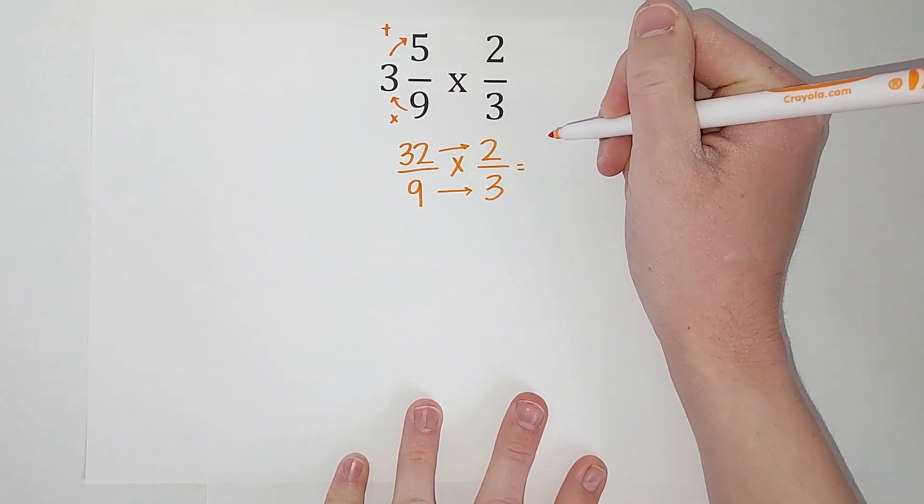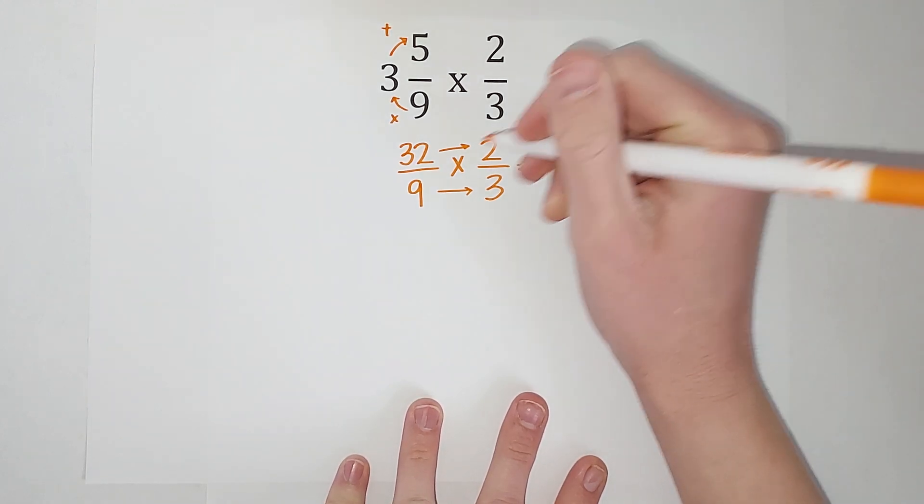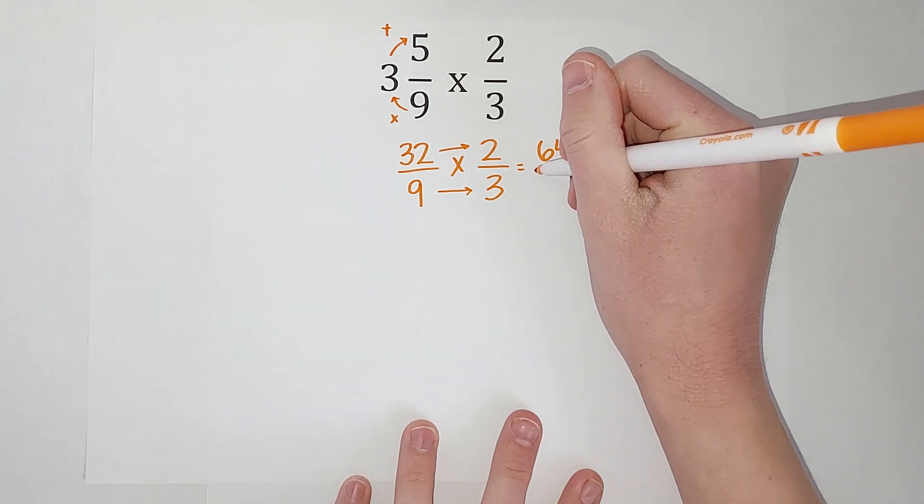So we just multiply straight across on top and bottom. 32 times 2 gives me 64, 9 times 3 gives me 27.